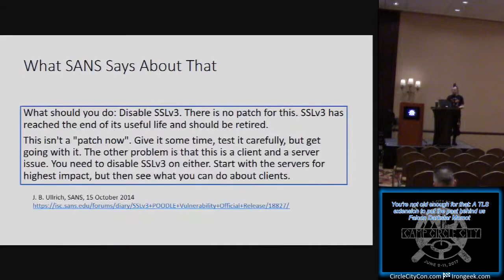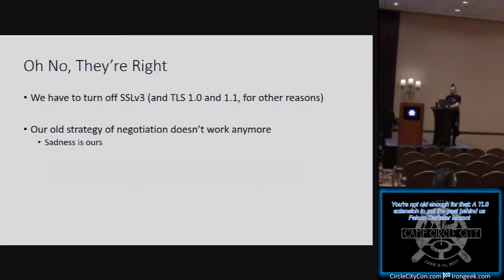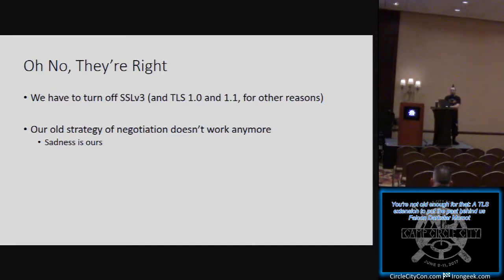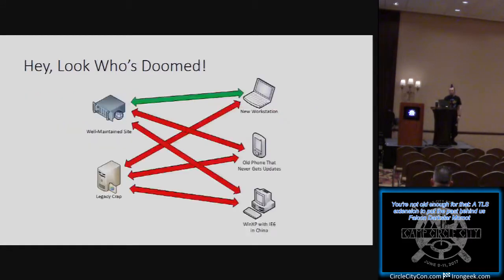Our solution to this point has been given by SANS: you should disable SSL v3.0 — you really have no choice. This isn't going to be a patch-now scenario. They're right — we have to turn off SSL v3 in the current landscape; we've left ourselves no alternative. We'll also be finding we have to do the same with TLS 1.1, and in due course the same problem with TLS 1.2 and TLS 1.3. Software doesn't age well; you have to update. Our old strategy of negotiation is not working well because of things like the POODLE attack — if anybody supports the bad protocol version, then everybody supports the bad protocol version.